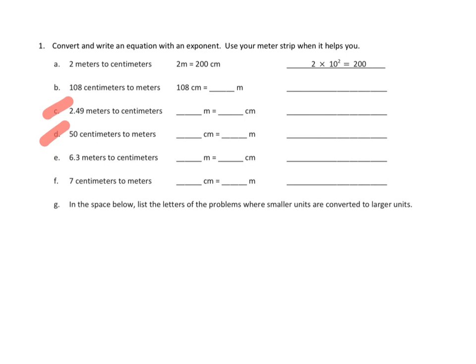Problem number one — let's highlight together. We are going to convert and write an equation with an exponent. Use your meter strip when it helps you. Let's take a look at 1a. They're asked to convert two meters into centimeters. Well, if we're going to go from meters to centimeters, there are a hundred centimeters in every meter. So we're going to take every meter — that's two — and multiply it by a hundred. In this case, they expressed a hundred as ten to the second power, and that gives us two hundred.